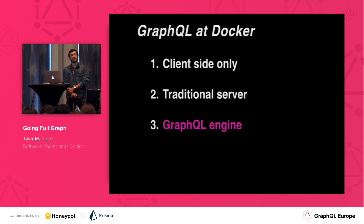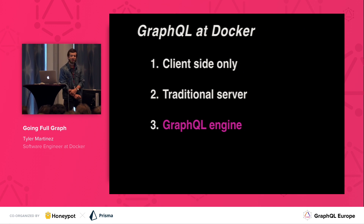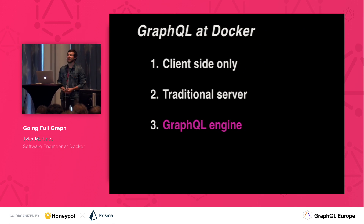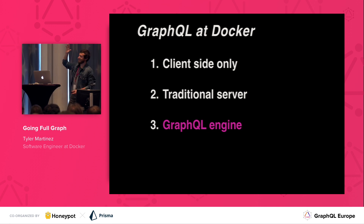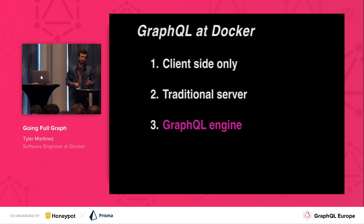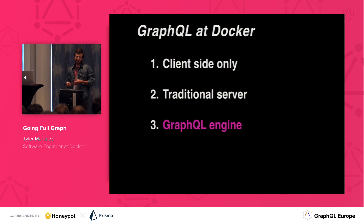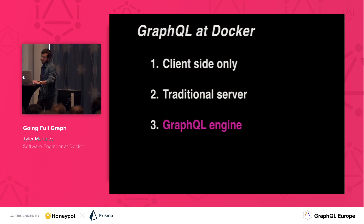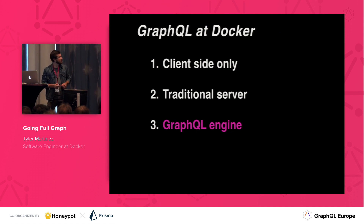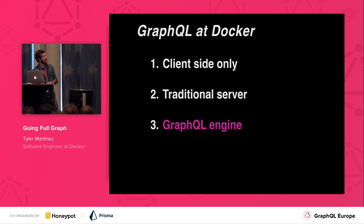The next step in architecture involves this thing I've been referring to as a GraphQL engine. A quick show of hands — who knows what I'm talking about when I say GraphQL engine? So this language isn't very formalized. I really pulled this from the Prisma docs, which describes parts of Prisma as a GraphQL query engine. We'll get to the definition in a minute, but first I'd like to talk a little bit about the dark side of GraphQL: the N+1 problem.